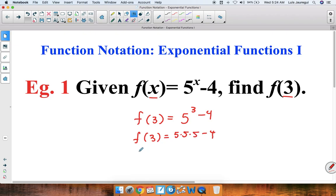Using the order of operations, we can evaluate this first component. So we have f(3) = 5 × 5 is 25, times 5 gives you 125, and then minus 4. So we can conclude that f(3) = 125 - 4, which happens to be 121.